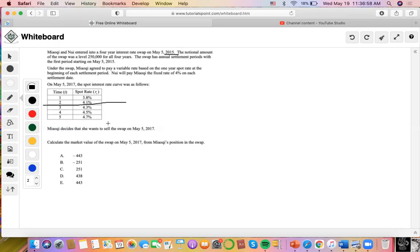What we're going to do is take the notional amount of $250,000 and discount it by one year's spot rate.